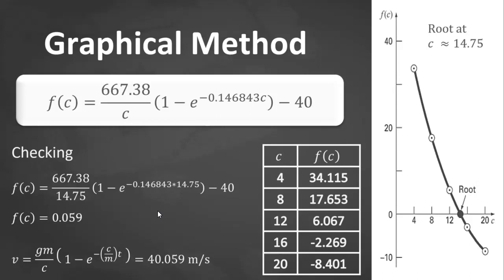Another way to check the validity is to substitute the value of c into the equation of terminal velocity, which gives v equal to 40.059 meters per second. That's also close to 40 meters. Therefore, graphical method can give us a rough approximation, rough estimate of the root.